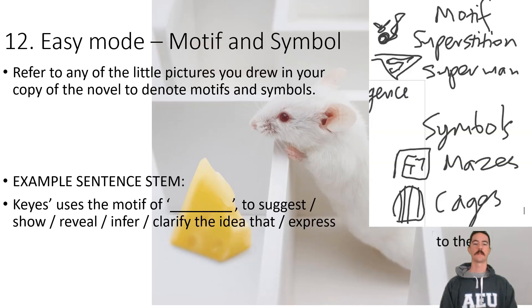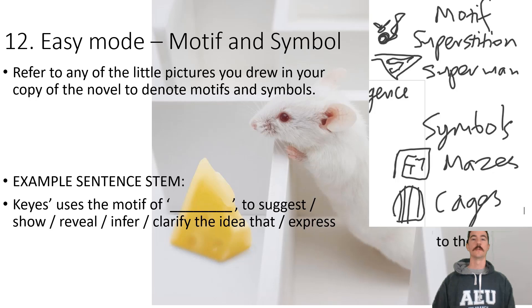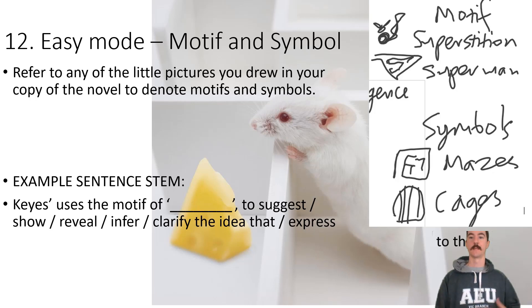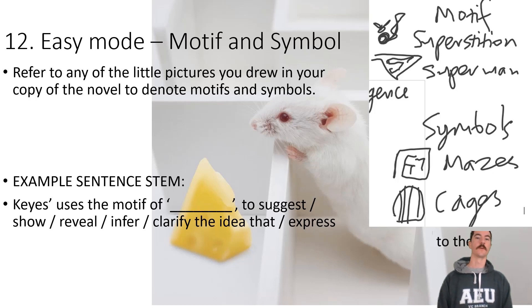This next one is easy mode — motifs and symbols — something rarely needing much teaching because it's straightforward. All you need to do is refer to any of the symbols annotated in the text as you read it. Examples include superstition, the superman concept, mazes, cages, and Algernon himself. Your sentence structure is: 'Keyes uses the motif of [X] to suggest / show / reveal / infer / clarify the idea that...'